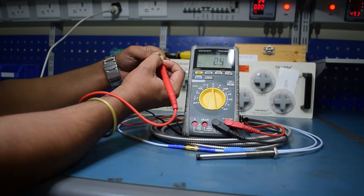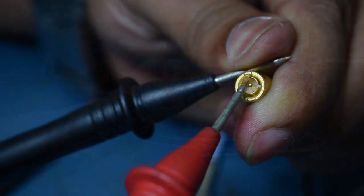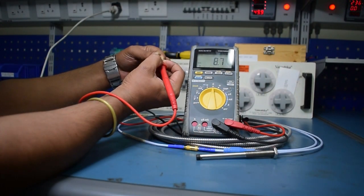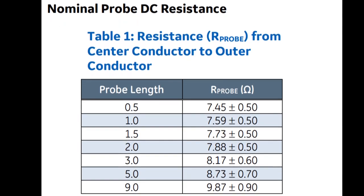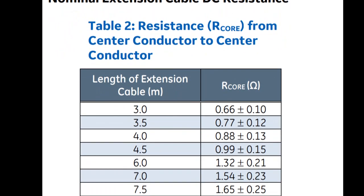The first step for verifying a proximity transducer system is to measure the resistance of the extension cable and probe. The normal resistance should be between 7 and 11 ohms depending on the system length. The datasheet for the transducer system lists the resistance values for the available probe length.